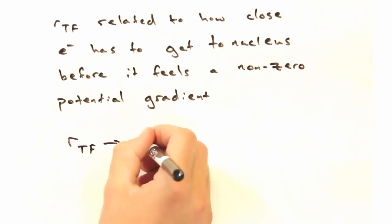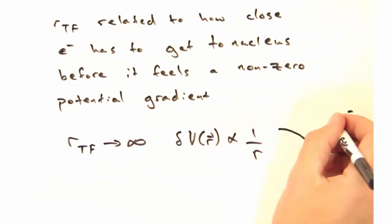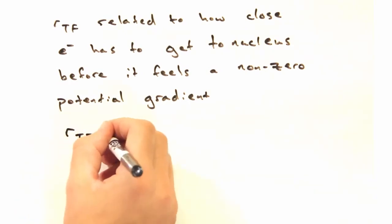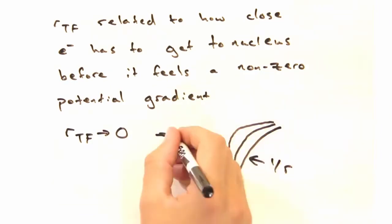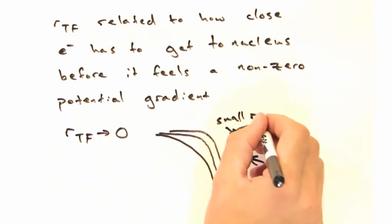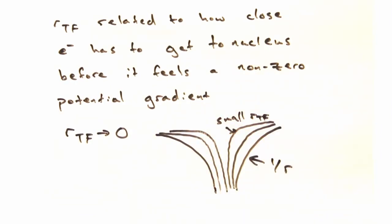Let's consider some limits. As Rtf goes to infinity, our expression for the potential perturbation goes to the unscreened 1 over R value. And at the other limit, the potential is almost like a delta function well. So the electron has to get incredibly close before feeling the attractive pull of the nucleus.